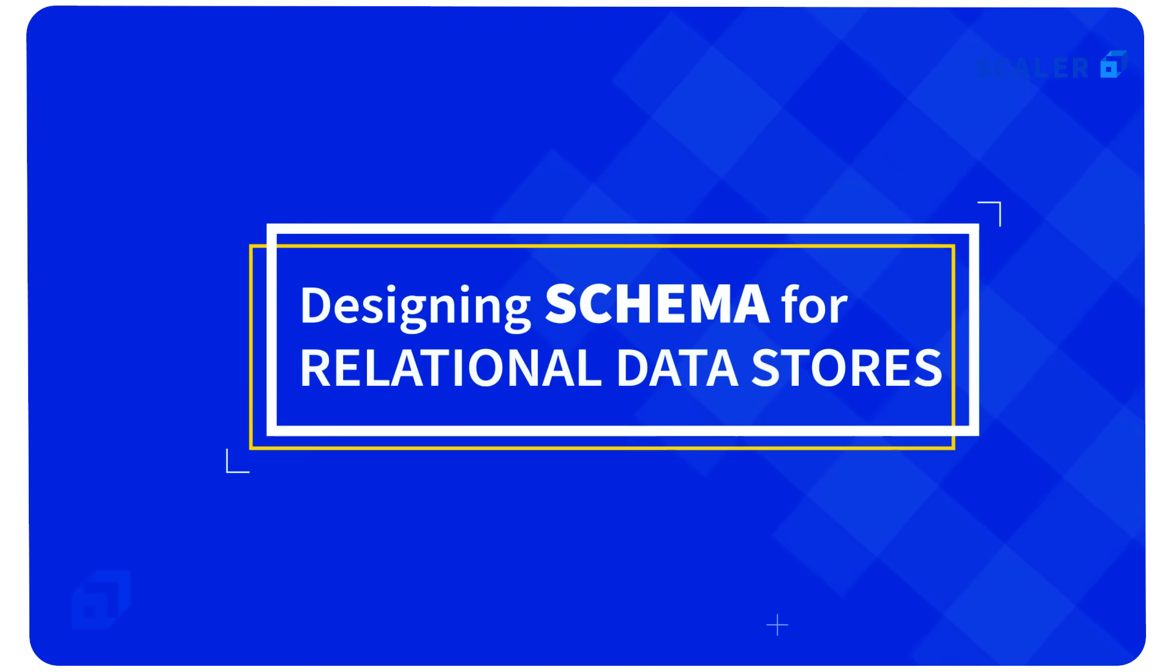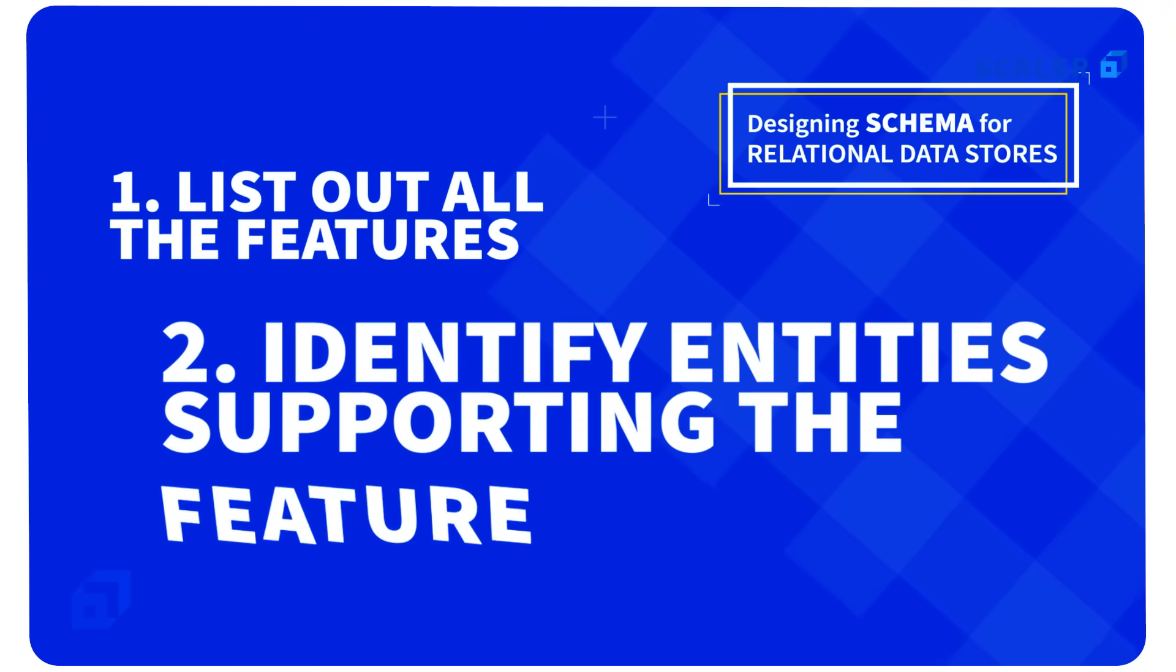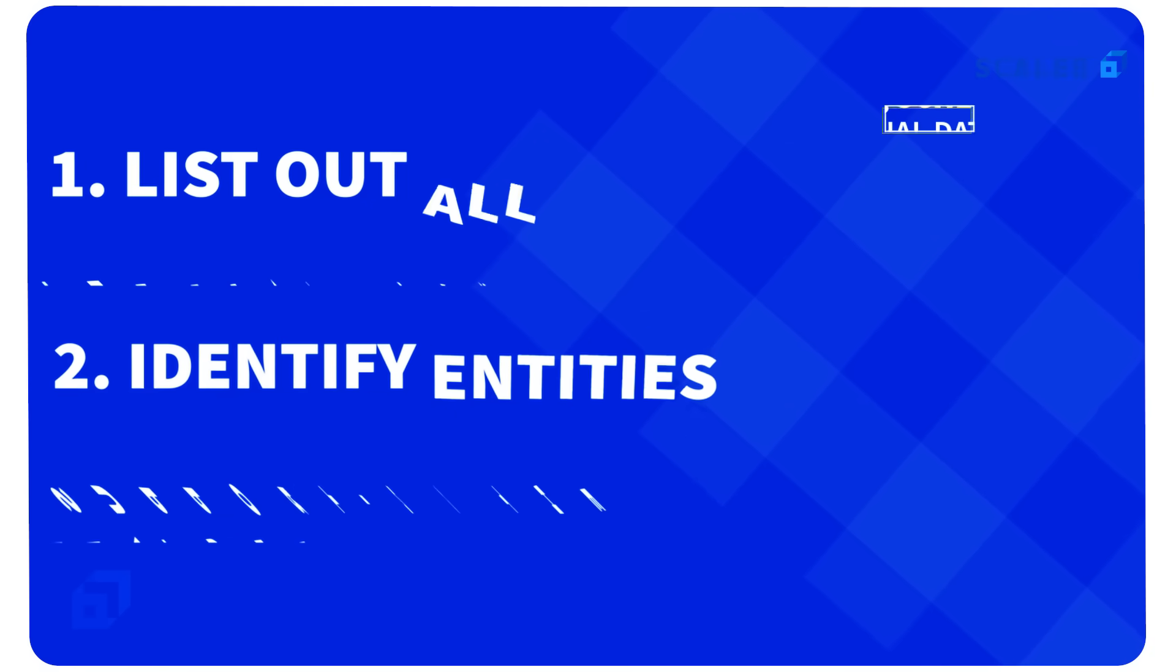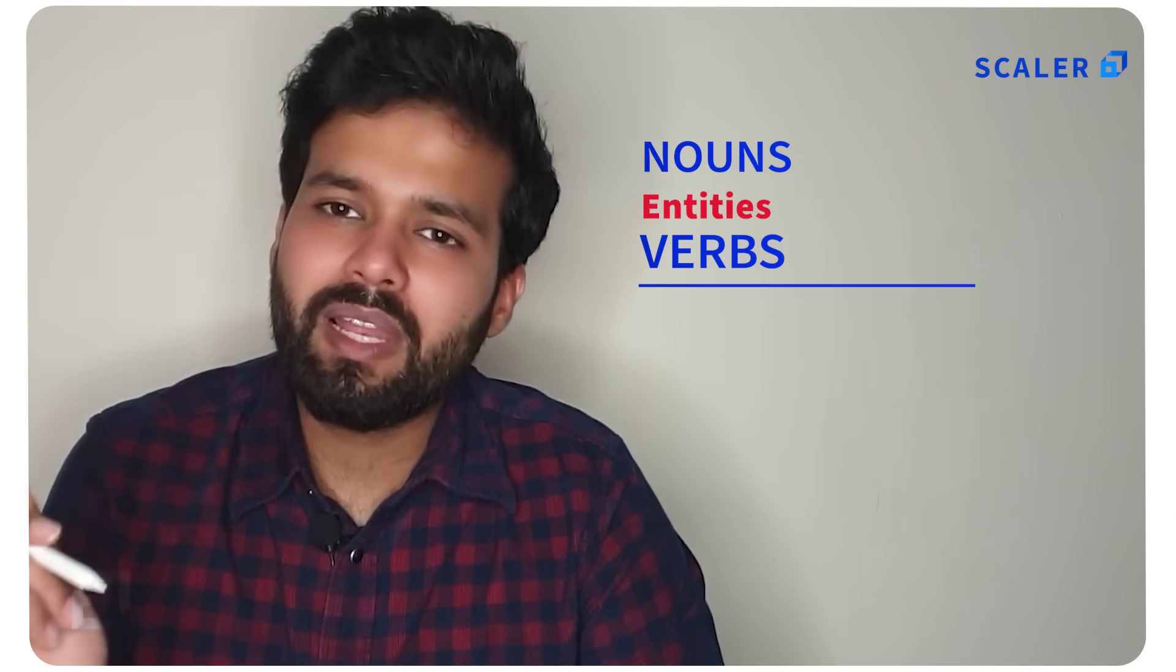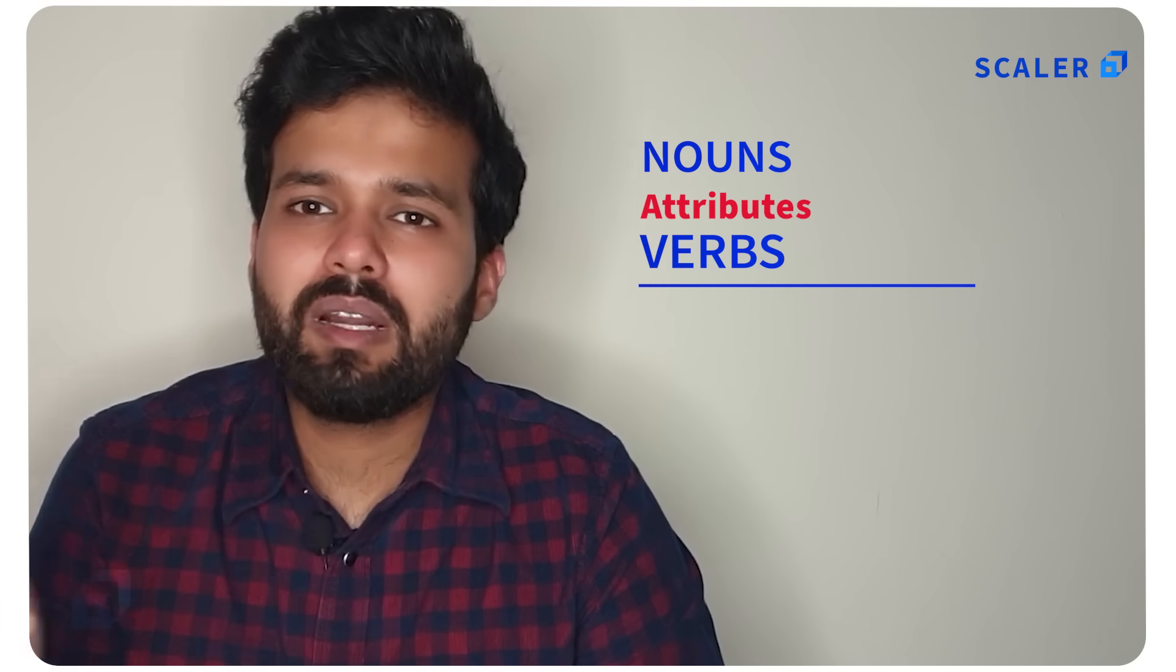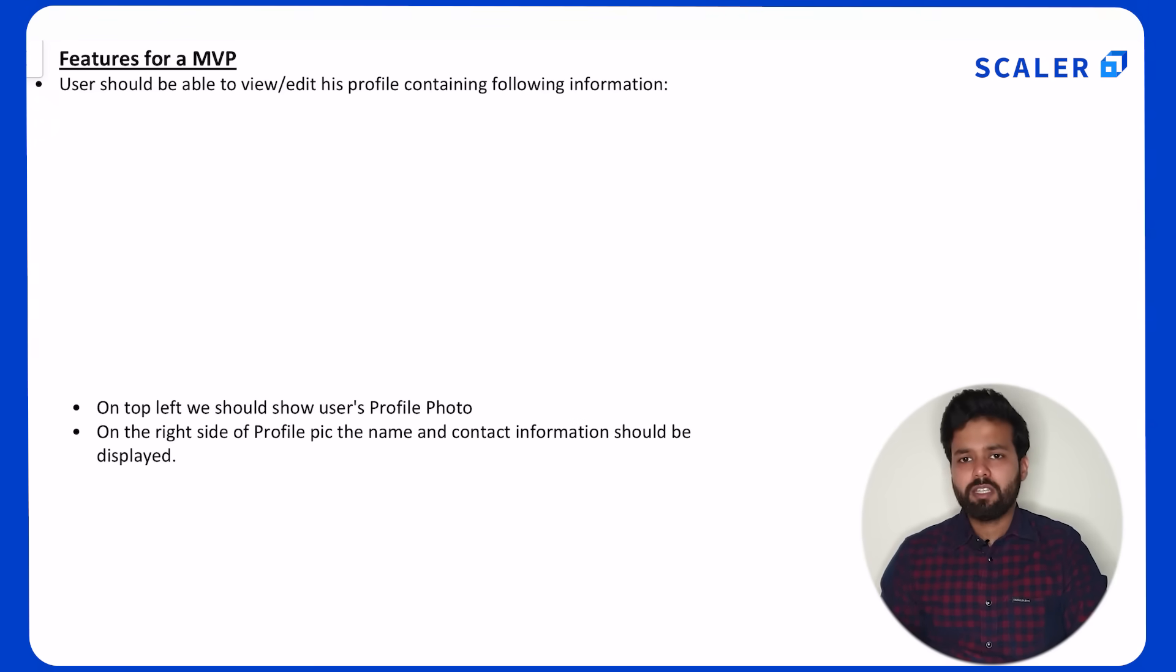Now to design any relational data store schema, all you need to do is list down all the features, then identify all the entities and relationships that will support your feature list. To do that, underline all the nouns and verbs. All the nouns will correspond to either entities or attributes in one of the entities you've already listed. The verbs will translate into either status changes or relationships between two entities. Now let's see this trick in action and design schema for LinkedIn.